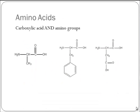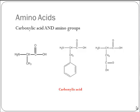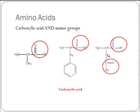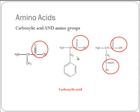What about amino acids? Amino acids have two functional groups: carboxylic acid and amine, or amino groups. The three amino acids shown are all alpha amino acids — the kind that bond together to make peptides and proteins. Each has at least one carboxylic acid. This particular amino acid has a side group that also includes a carboxylic acid, making it an acidic amino acid.